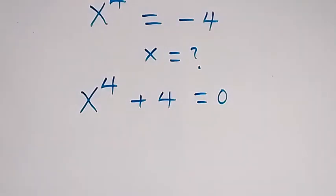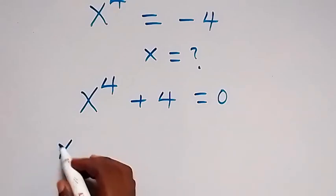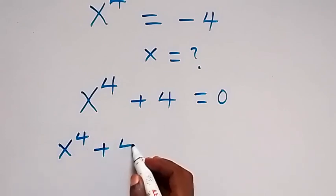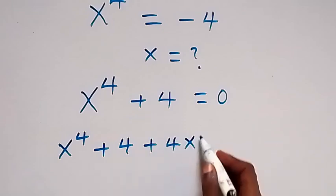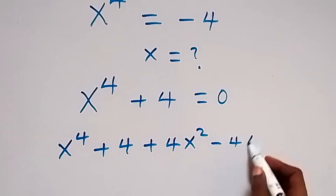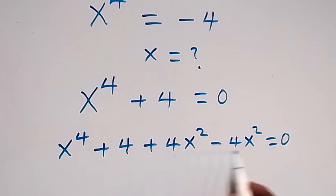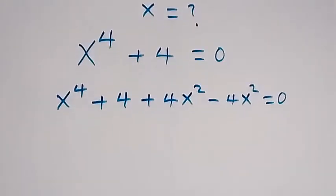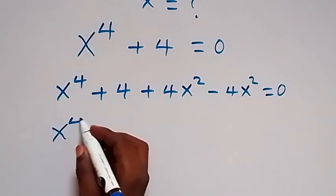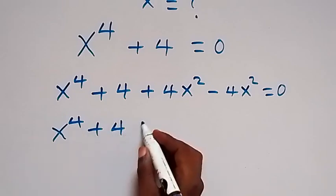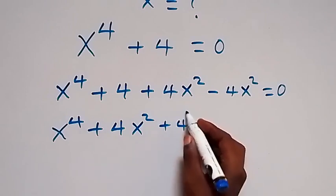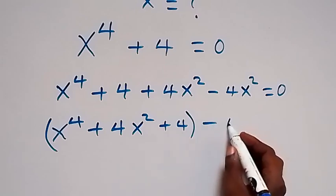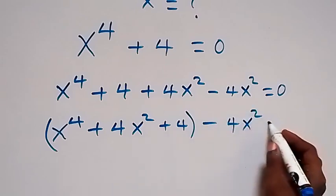From here, let's add 4x squared and also subtract the same thing. So we have x raised to the power 4 plus 4, then plus 4x squared, then minus 4x squared equals 0. Since we have not done anything special yet, when these cancel each other, we still have x raised to the power 4 plus 4.